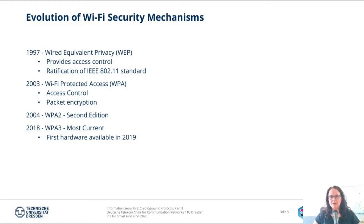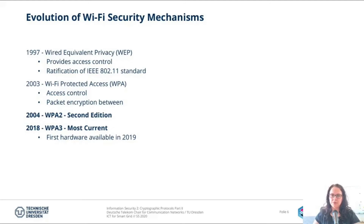Only one year later, WPA2 was released also by the Wi-Fi Alliance. WPA2 was then the final WPA standard and it was used for 14 years. After 14 years, you can imagine it was time for a new standard because computation technologies change and so do encryption technologies. I'm going to focus on WPA2 because it's widely used currently, and WPA3 because it's the most current standard — the first hardware was available in 2019 — and I highly recommend using WPA3 if it's possible.